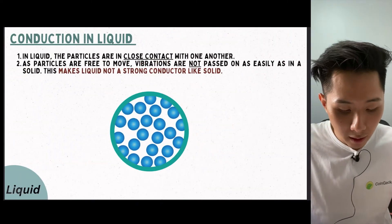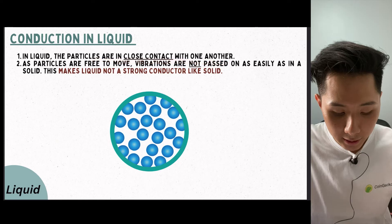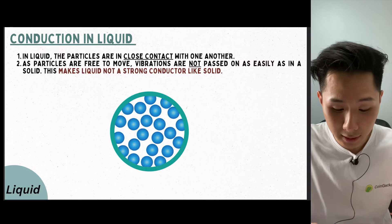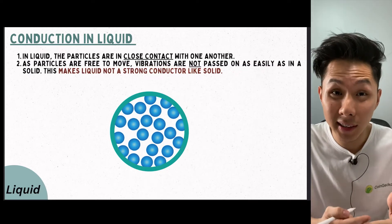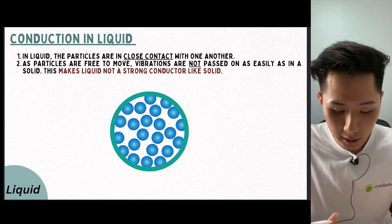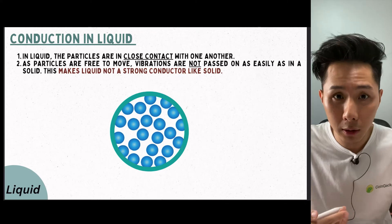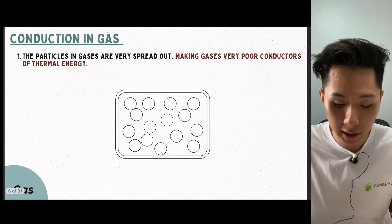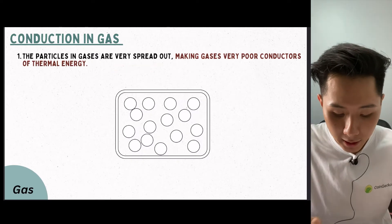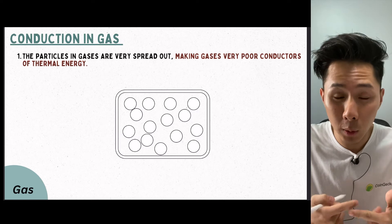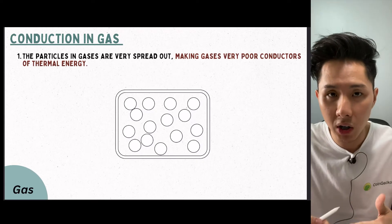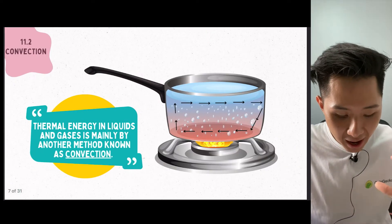In liquid, particles are in close contact and are free to move, unlike solid where they are all packed together. Therefore, vibrations are not passed on as easily as in solid, making liquid not as good a conductor. Conduction in gas is even worse because the gas particles are very spread out, so they can't really transfer heat energy via vibration — even if one particle vibrates, it can't pass energy on to other particles.